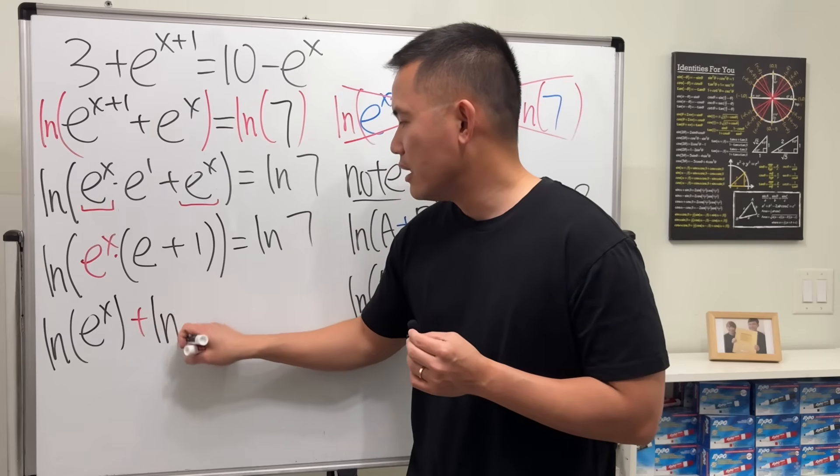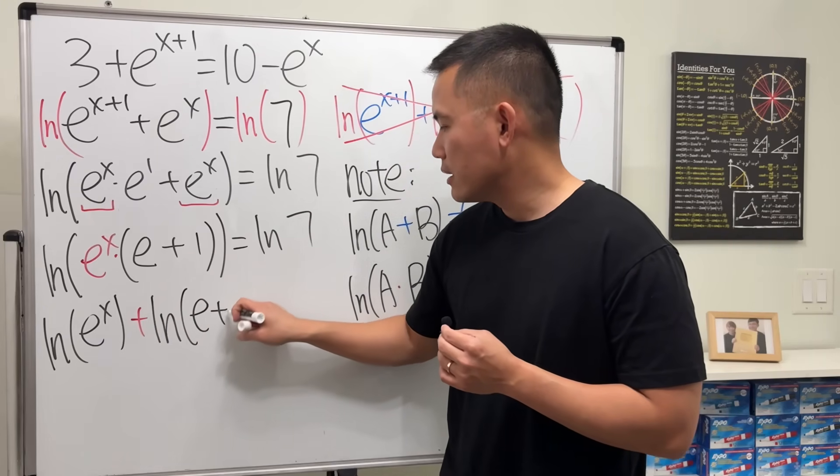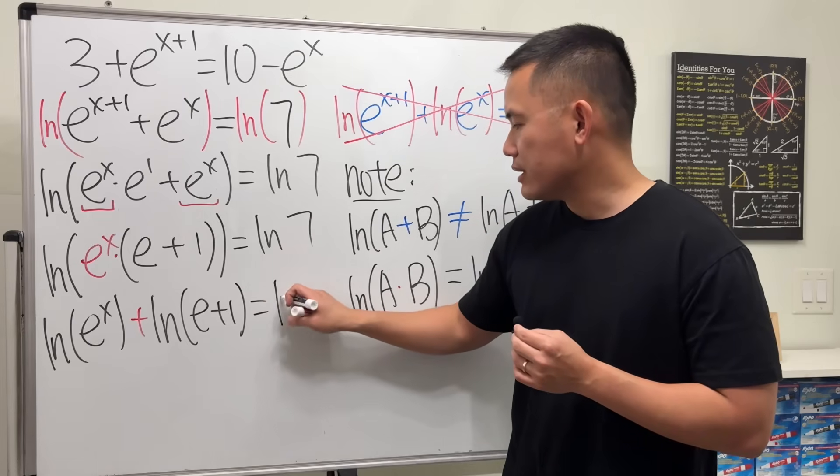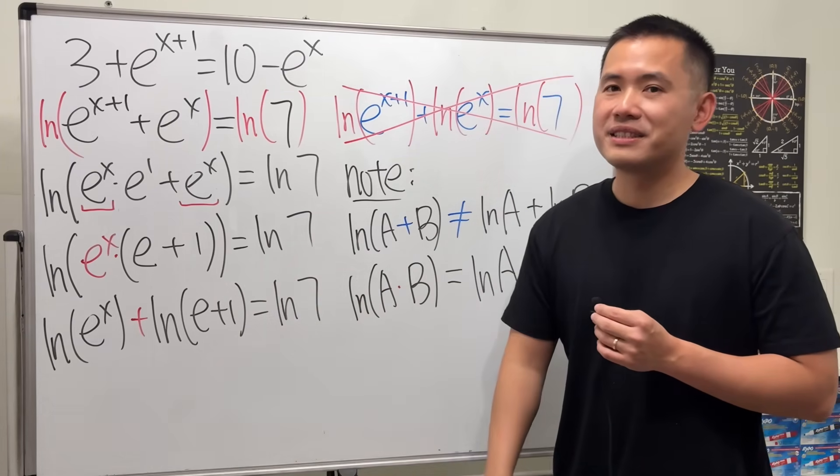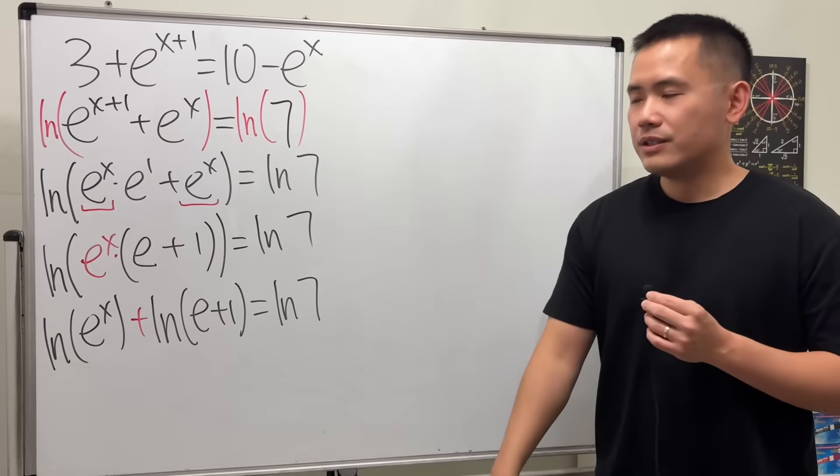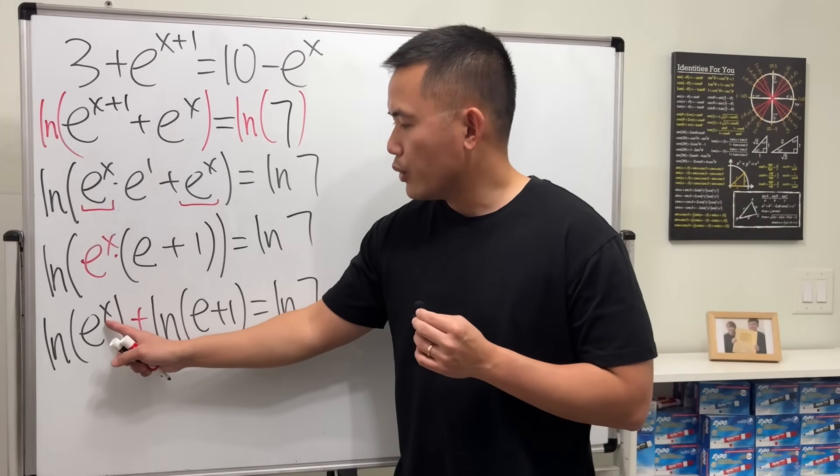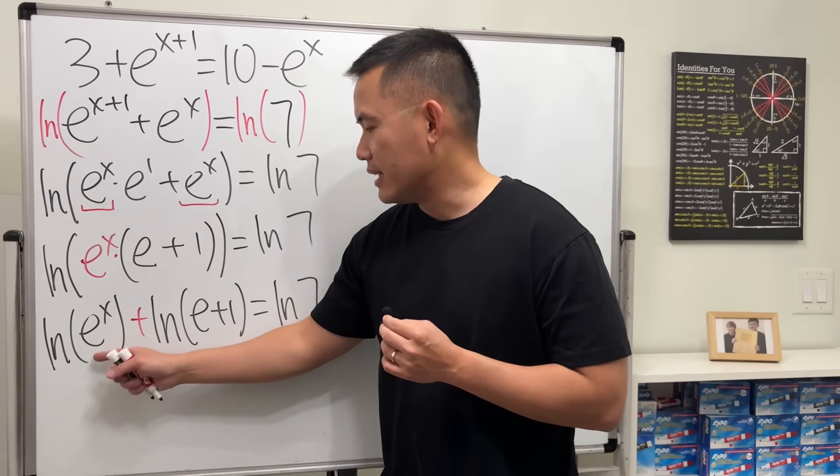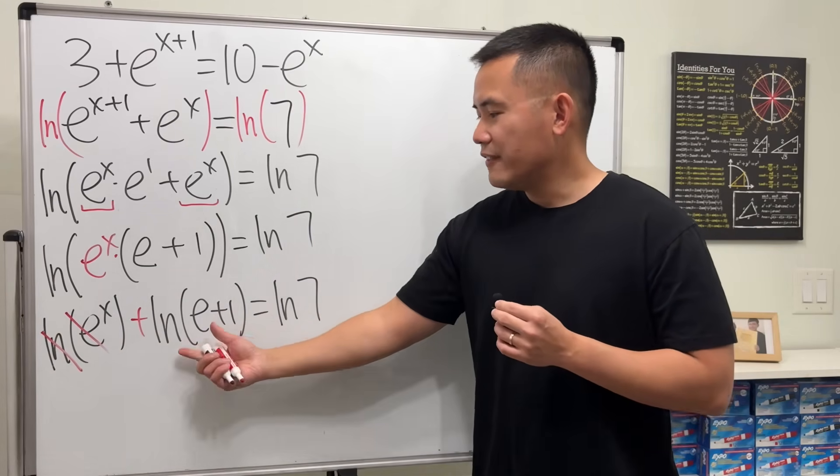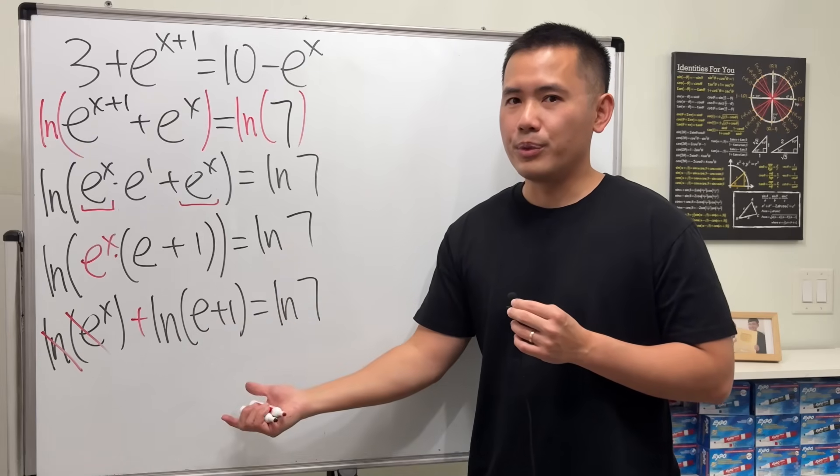And we will get ln of the first plus ln of the second, and we still have ln(7). So this is how you can break it apart, not this. To continue, notice we only have the x right here.